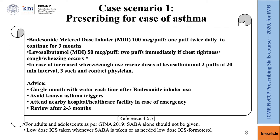Please remember that the recent 2019 GINA guidelines for adults and adolescents over 11 years state that low-dose inhalational corticosteroids should be taken whenever SABA is taken, or as-needed low-dose ICS-formoterol. SABA should not be given alone.